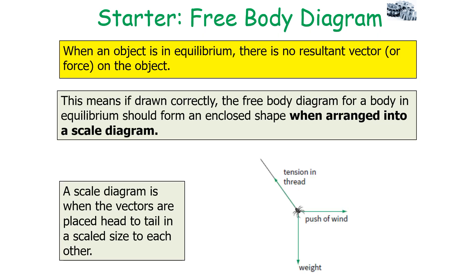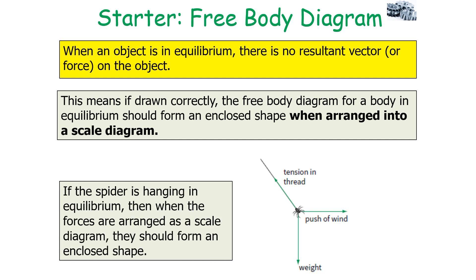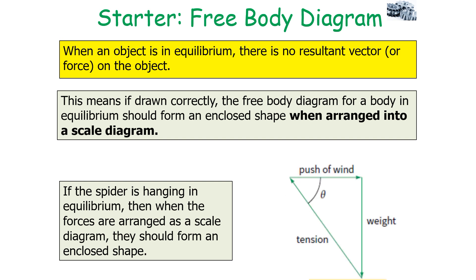When an object is in equilibrium there is no resultant force. If drawn correctly, the free body diagram for a body in equilibrium should form an enclosed shape when the vectors are arranged head to tail in a scale diagram. For example, if a spider is hanging in equilibrium, when its forces are arranged head to tail they form a closed right-angle triangle.